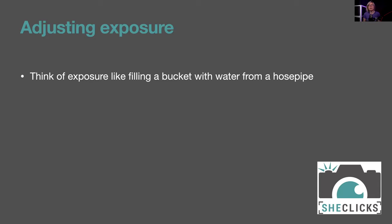I find it helpful to think about exposure as filling a bucket with water from a hosepipe. The bucket is fixed in size — just as a sensor at a specific ISO requires a set amount of light to create an image. With a narrow-bore hosepipe you must leave the tap running a long time to fill the bucket. Think of shutter speed as how long the tap is open — a small aperture means a long exposure, a large aperture means a short exposure.